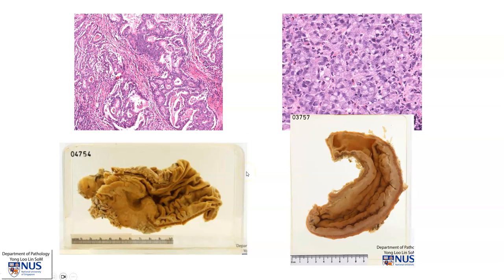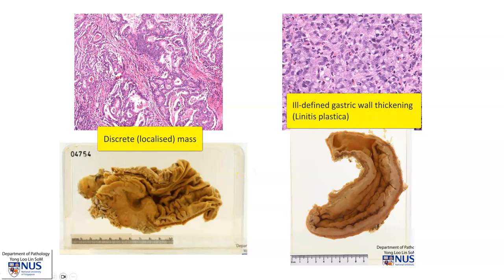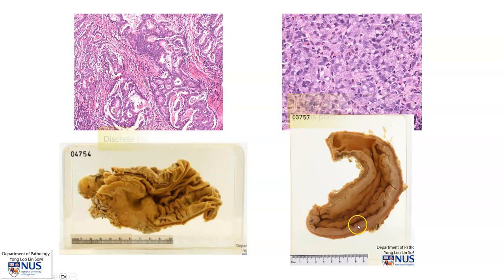In general, these two main types of carcinoma — intestinal versus diffuse in Lauren — tend to have different gross appearances. The intestinal type carcinoma tends to present more with a localized mass, whereas the diffuse type or poorly cohesive type carcinoma is more likely to show a very ill-defined thickening of the gastric wall. You can view these two interactive virtual pathology specimens in our online virtual pathology museum, and the link will be shown later.